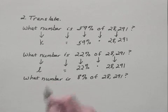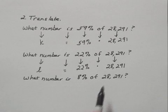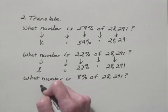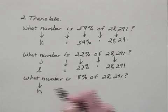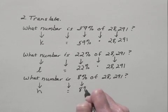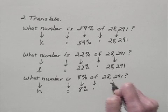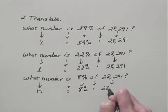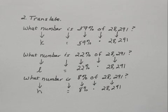And finally we need to find the number of heart transplants. Remember that we let H represent that. What we're asking is what number is 8% of 28,291. We let H represent the number of heart transplants. Is is equals. We have 8%, of translates to multiplication. And again we have 28,291. So we have three equations.